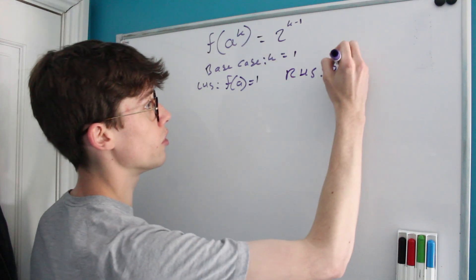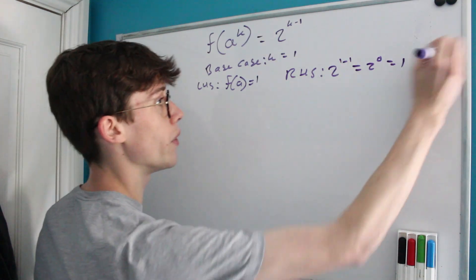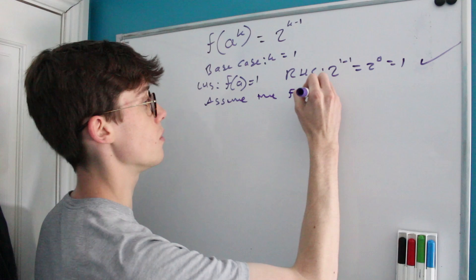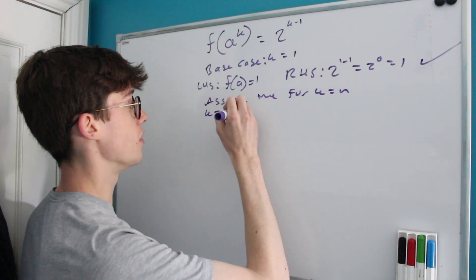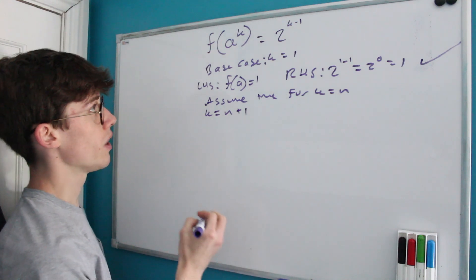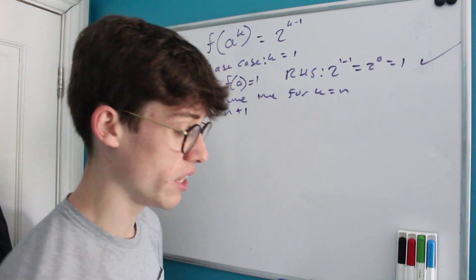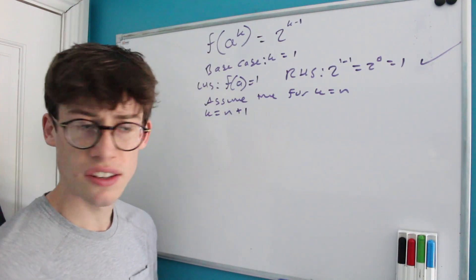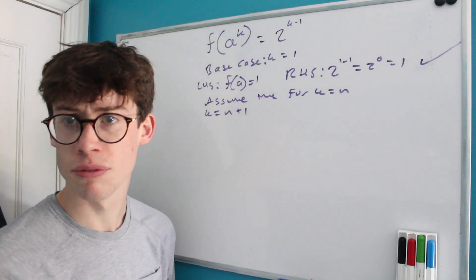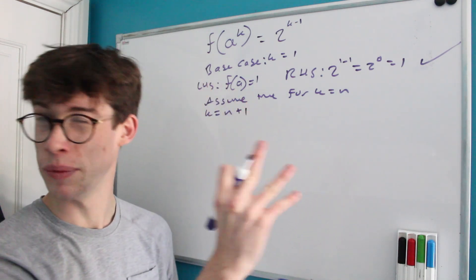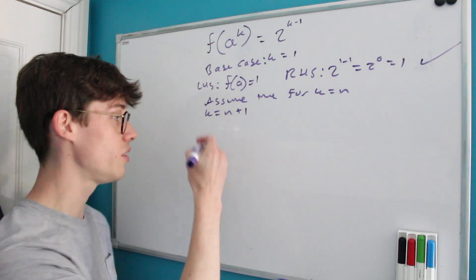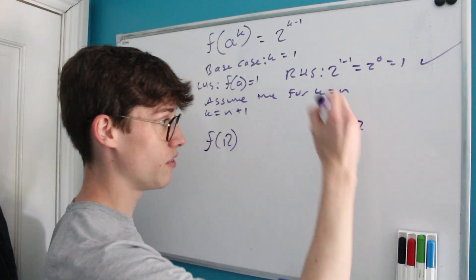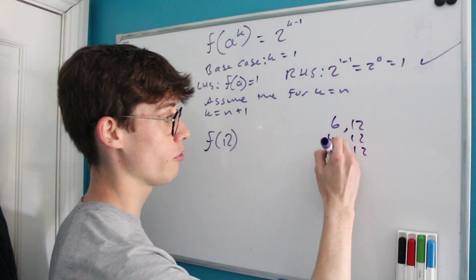We assume the result is true for k = n, and now consider k = n + 1. At this point it's useful to introduce another idea about the function: since the ending point is fixed, a good way to count possible lists is to consider all possible penultimate terms. For example, for f(12), the possible penultimate values are 6, 4, 3, 2, and 1.